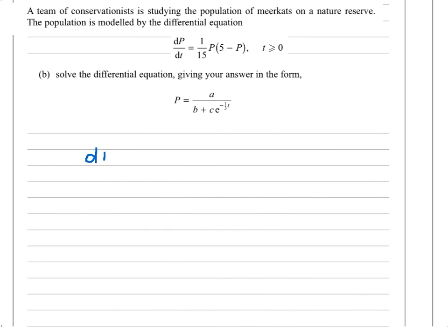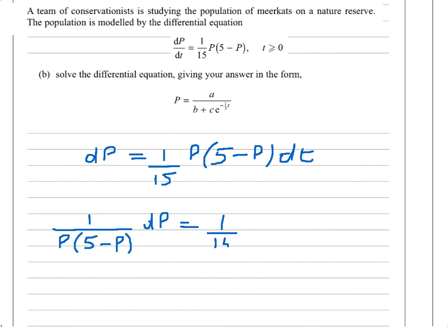Your first thought should be to separate out those variables. So what I'm going to do, I'm going to times up by dt first of all. So I've got 1 over 15 dP equals P(5-P) dt. Now I need to take those underneath. So I'm going to divide by P(5 minus P). I could take the 15 as well, but actually we've just seen what the partial fractions are if I just take the other bits. So let's just make our life easy.